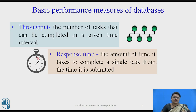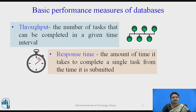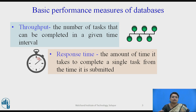The basic performance of a database is measured by two things. One is throughput and another one is response time. Throughput means the number of tasks, transactions, or queries completed for a given time interval. Response time means the amount of time it takes to execute a single task — whether it is a query or a transaction. These are the two basic factors by which database performance is measured.